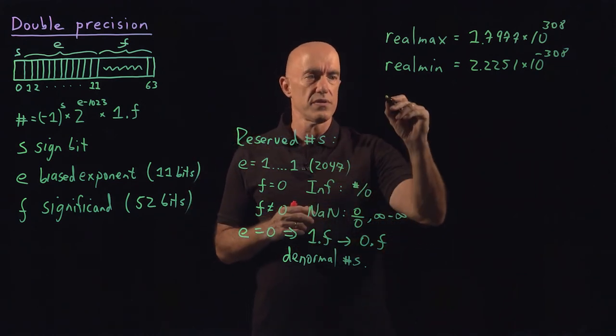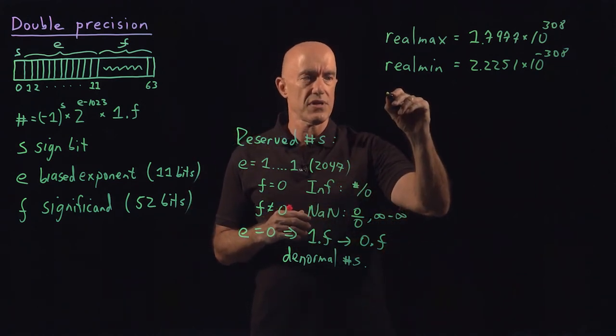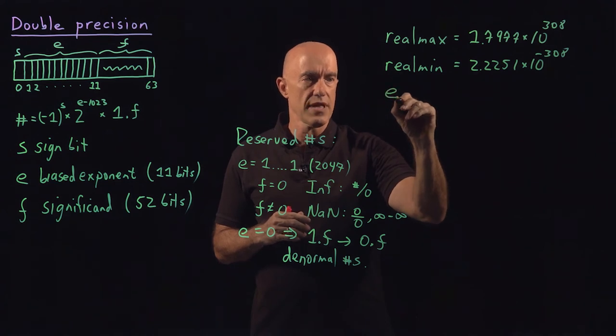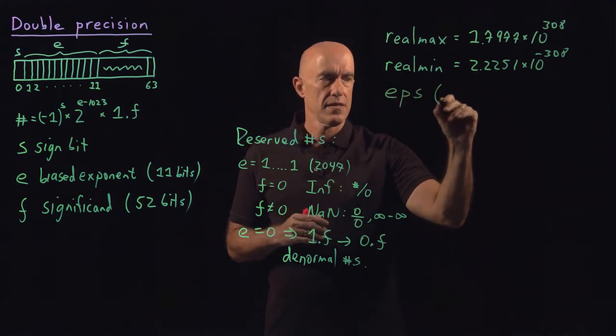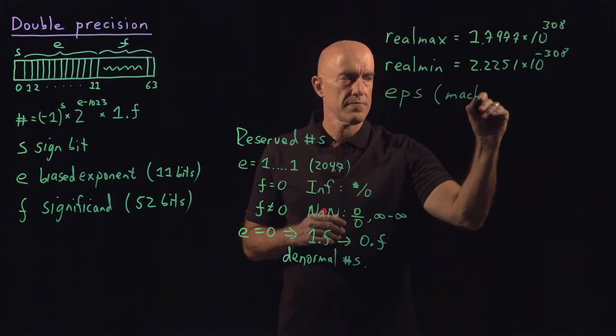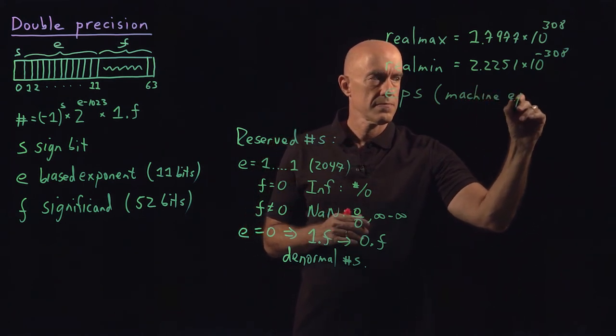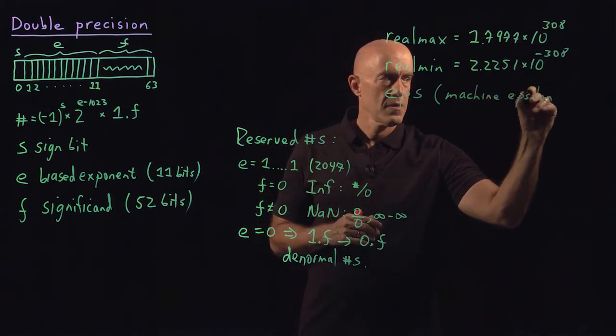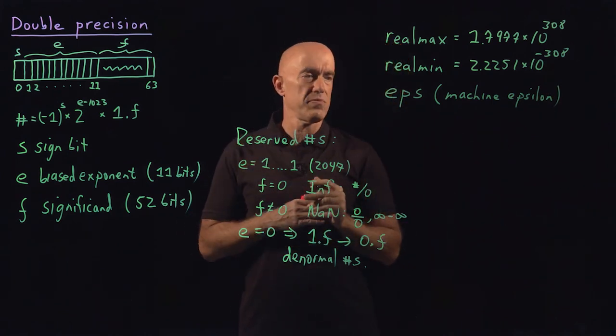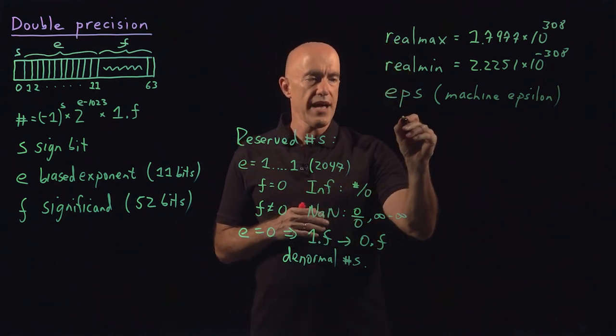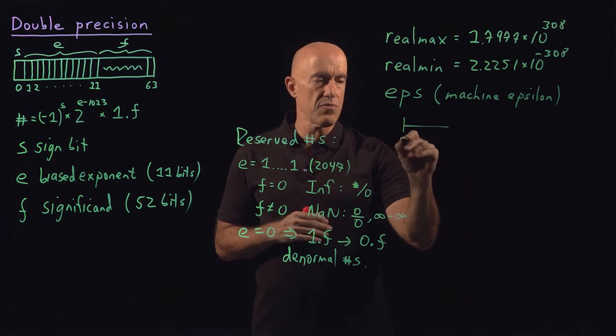Another number which is very important is called machine epsilon. We'll call that EPS. That's machine epsilon. This tells you the spacing between numbers.